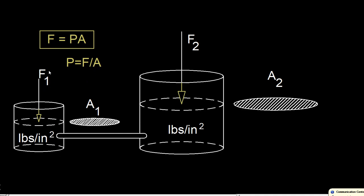Here we're pushing down with some force, building up pressure with this cross-sectional area. On this side, if the whole system is in equilibrium, let's say we have a thousand pounds over one square inch on this side — that gives us a thousand pounds per square inch, or 1000 PSI.